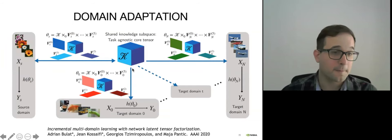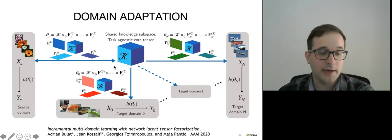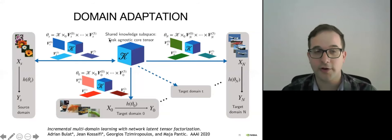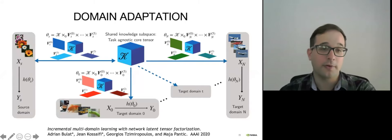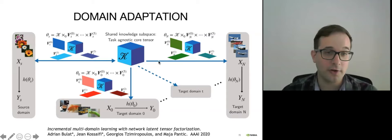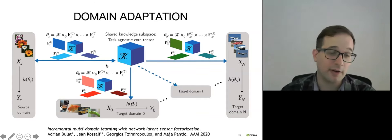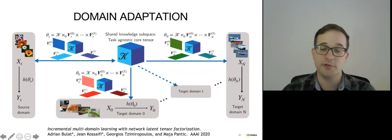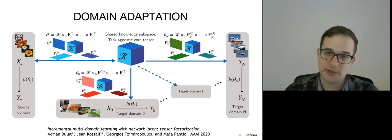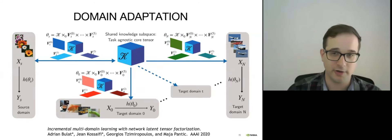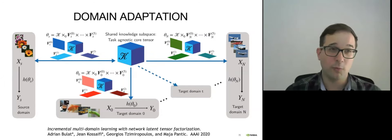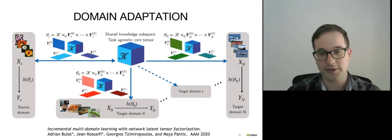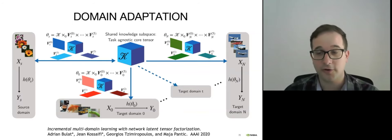Once we have T-Net — a network parameterized by a single tensor — we can apply this to domain adaptation, where the goal is to learn a single model on a source domain and, as new data becomes incrementally available for new tasks, specialize the model without catastrophic forgetting on the original task. We apply Tucker decomposition to that tensor, treating the core as a shared knowledge subspace across all domains, and for each new domain we learn task-dependent factors that project from this shared subspace to the specialized sub-domain. We tested this on the Visual Decathlon (10 datasets), training on ImageNet and testing on UCF 101, Omniglot, etc., achieving a model with only 1.35× parameters of the original network that outperforms previous works in decathlon score and average accuracy.